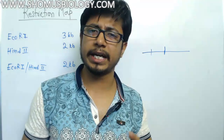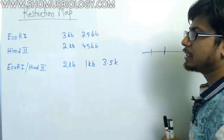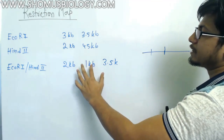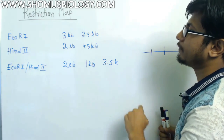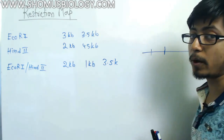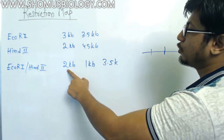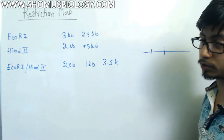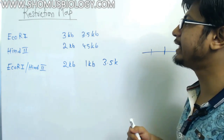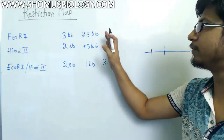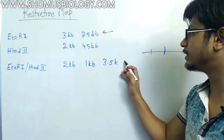So how do you solve this type of problem? Although this is really easy, there are two approaches you can always use. The first thing you should check is the total length — when you add up the fragments you will always end up at the total length. For example: 3 plus 3.5 gives 6.5; 2 plus 4.5 is also 6.5; 2 plus 1 plus 3.5 is also 6.5. Now what you need to do is take any restriction enzyme's fragments and compare them with the double cut.